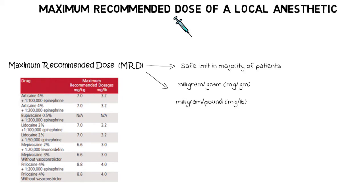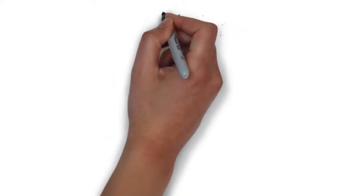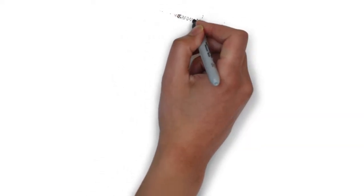Now if we want to calculate how much of a local anesthetic should be given to a single patient, we first need to understand how much of the actual drug is present in a single cartridge of a local anesthetic. A cartridge generally has approximately 1.8 ml of total solution in which there is a specific percentage of a local anesthetic agent.